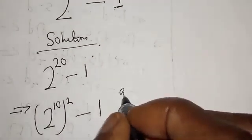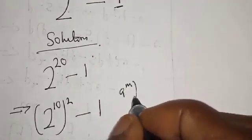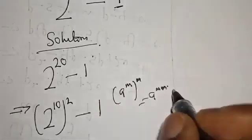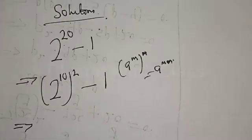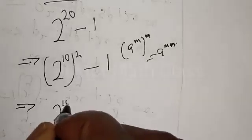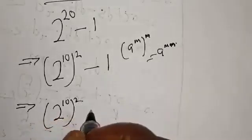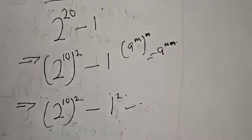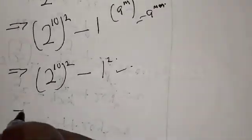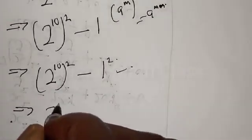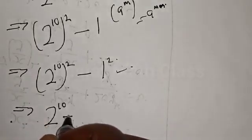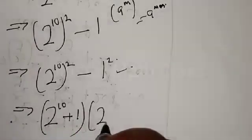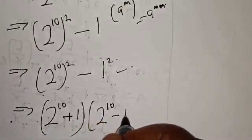That is, using the rule: if you have a raised to power m, raised to power n. This implies that we have 2 raised to power 10, squared, minus 1, which is a difference of two squares. Then this can be expressed as 2 raised to power 10 plus 1, into 2 raised to power 10 minus 1.